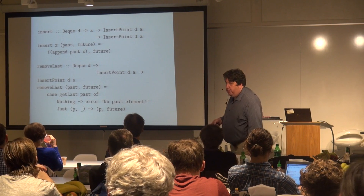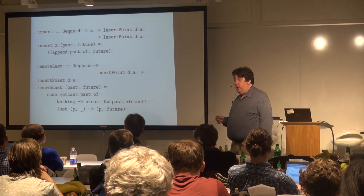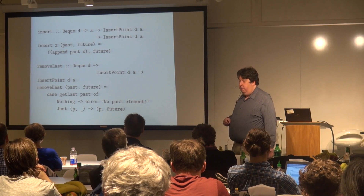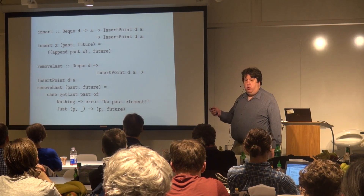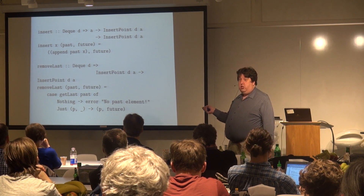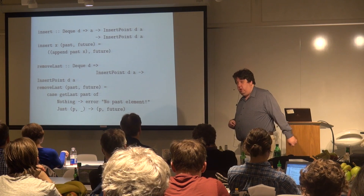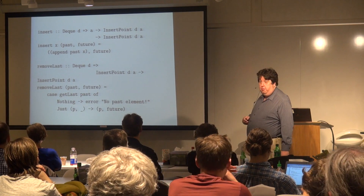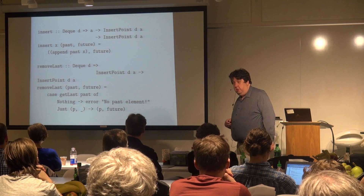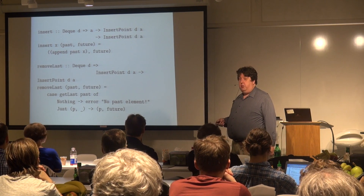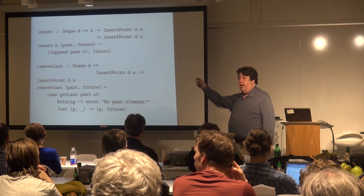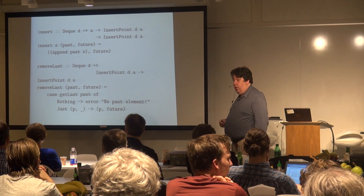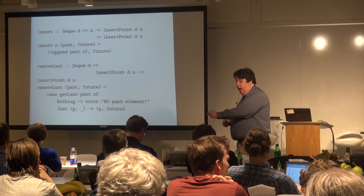At any point in time I can insert an element into the sequence by adding it to the end of the stuff that has already gone by. I can also remove the element that just went by by removing it from the past DQ. You can do exactly the same to put an object into the future, remove the next object I was about to get, and step backwards — you can go both directions, just moving objects from one queue to the other.